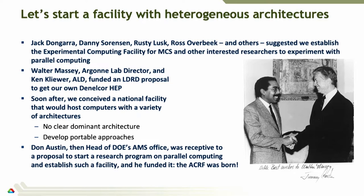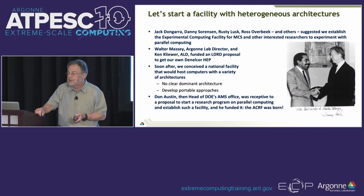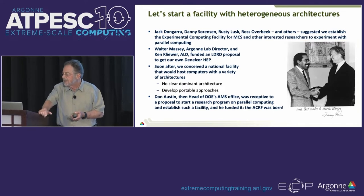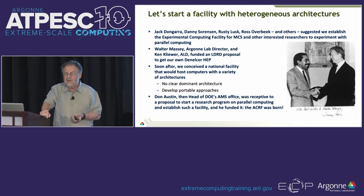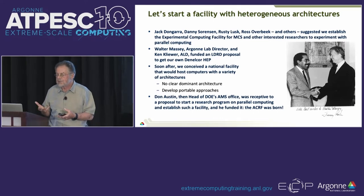A very famous mathematician, Ahmed Sameh, who'd been publishing papers, came to Argonne and told me: 'Paul, I have to start over again. All these algorithms based on hypothetical architectures just don't work.' Fortunately, colleagues in my division — Jack Dongerra, Rusty Lusk, Ross Overbeck, and Danny Sorensen primarily — decided we should try to get funding so that we can have a menagerie of parallel computers and be able to use real ones and develop algorithms that actually work.